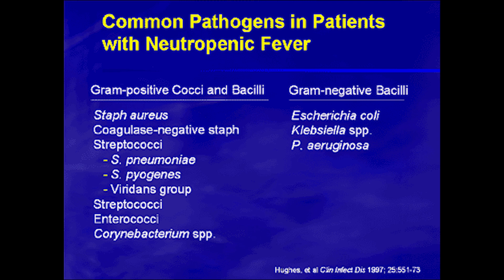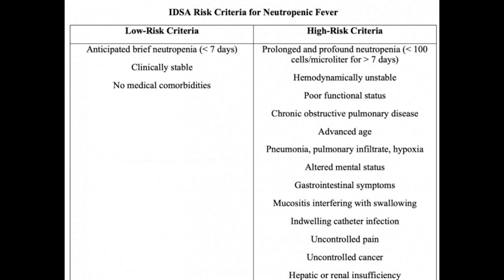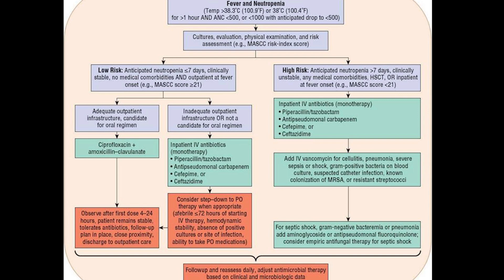Fungal infections are also a concern for patients who are high-risk with neutropenic fevers. For patients with high-risk features for serious complications, you definitely want to consider covering them for possible fungal infections. ID should be suggesting fungal coverage for these patients. If the patient is persistently febrile after a couple of days on antibiotics and you haven't identified the source, you will not be wrong in covering them for fungemia, just because there's a very high risk for patients with neutropenia — anything with immunosuppression could cause fungemia.